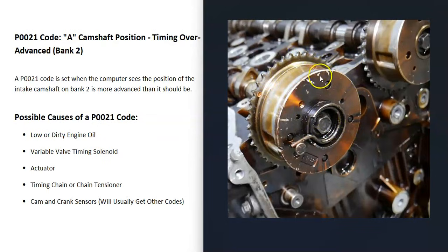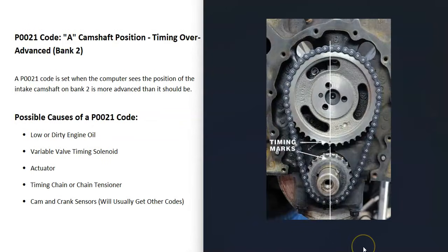The VVT solenoids also work with what's called an actuator, which is basically where the timing chain rides. The timing chain rides right on top of the actuators. If one of these actuators goes bad or there's some kind of issue with them, that could cause a P0021 code.